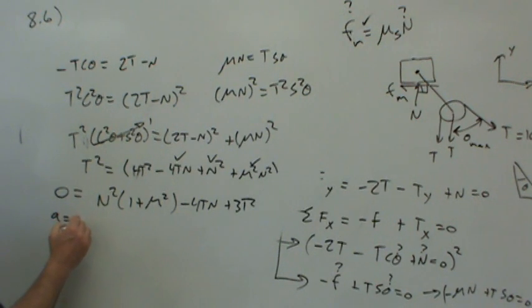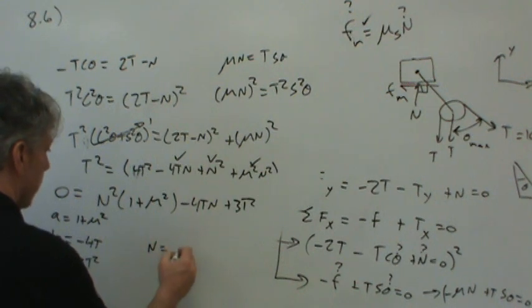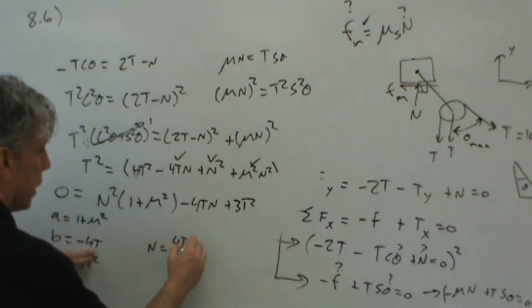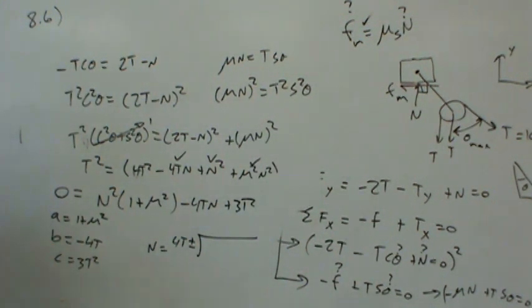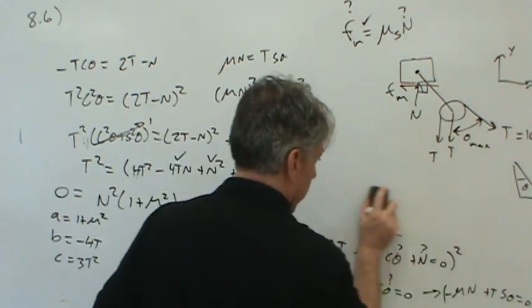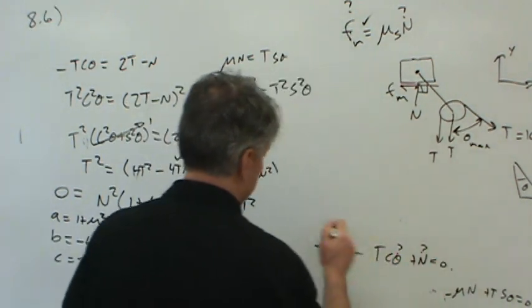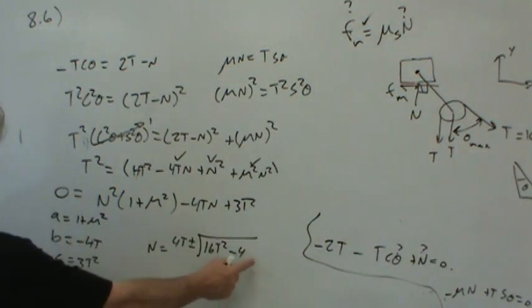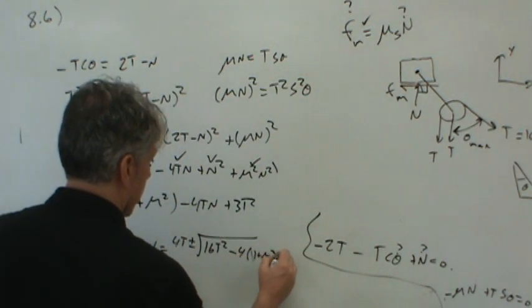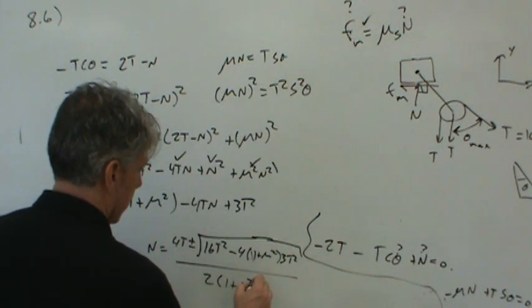So in this case, A is 1 plus mu squared, B is negative 4T, and C is 3T squared. So N is equal to, how does it go? Negative B. So that's 4T plus or minus root B squared. Well, that's easy. That's just 16T squared. Minus 4AC. A is here. Let's see. I can keep my equations by doing this. I'll want these equations a little bit later. So where were we? Quadratic equation. 4AC. So A is 1 plus mu squared times 3T squared over 2 times A, which is 1 plus mu squared.